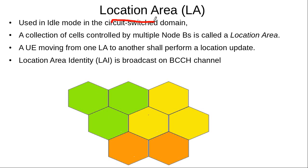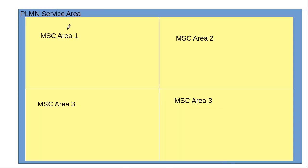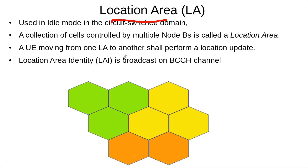Now we come to location areas. The significance of the location area is for the circuit switch domain. In 3G, the core network is divided into the circuit switch domain and the packet switch domain. When a mobile is on — meaning it has registered with the network but is not in a circuit switched call — the location area is important for managing its mobility. This mobile is in idle mode, not in a circuit switched call.